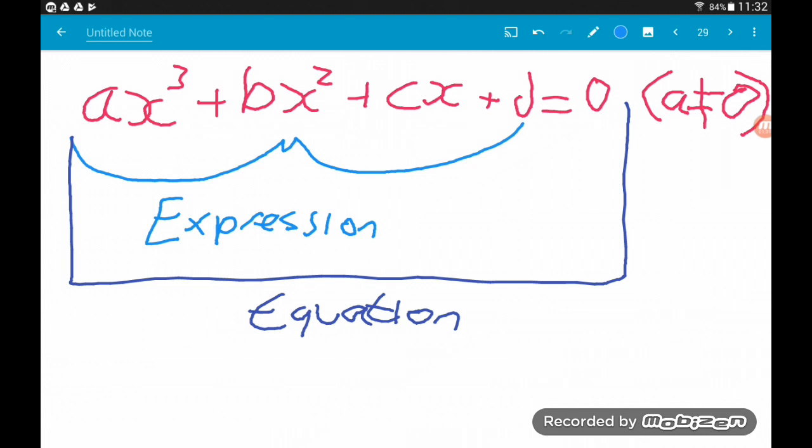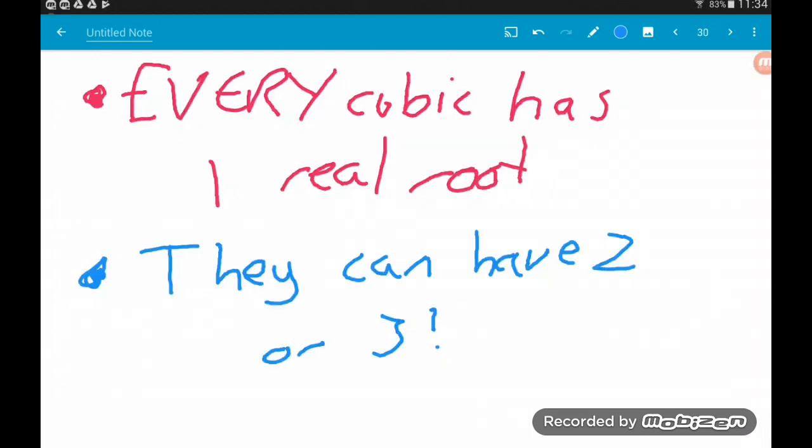So we can have any combination of b, c, and d being zeros, but a is not allowed to equal zero.